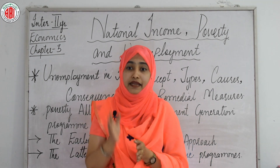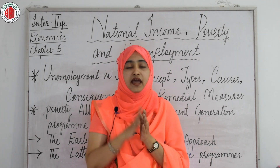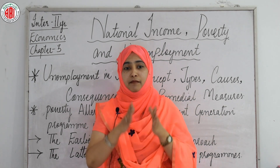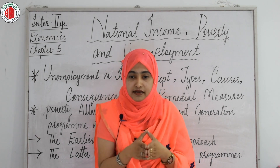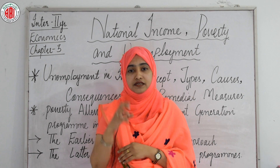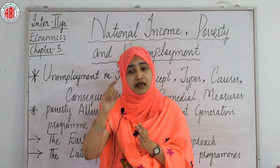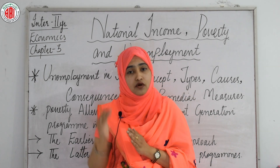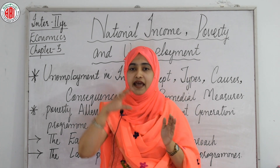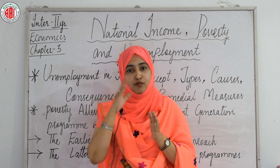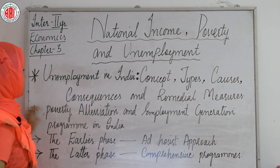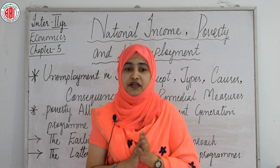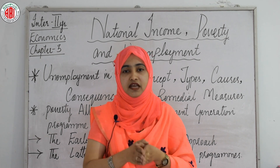A bird's-eye view of various poverty alleviation and employment generation programs in India taken up from time to time is presented in a table. By observing this table, we have covered and discussed this chapter, which included: national income and per capita income, sectoral contribution, share of public and private sectors to national income, inequalities in distribution of wealth and income, causes, concepts, consequences, types, and remedial measures of poverty and unemployment in India, and poverty alleviation and employment generation programs. This completes Chapter 3: National Income, Poverty, and Employment.